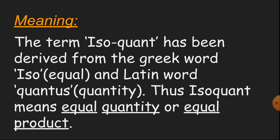The term isoquant has been derived from the Greek word 'iso', which means equal, and the Latin word 'quantus', which means quantity. Thus, isoquant means equal quantity or equal product.